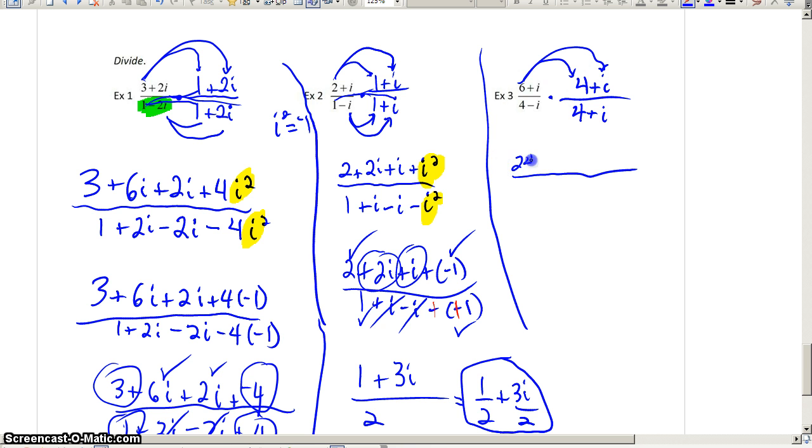6 times 4 is 24. Here, we get a 6i. i times 4 is 4i. i times i will be, again, i squared.